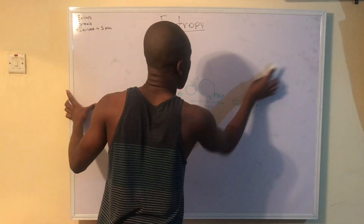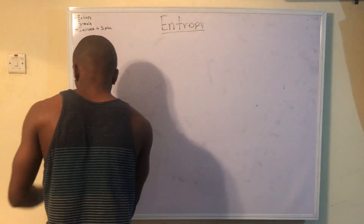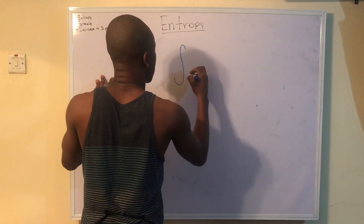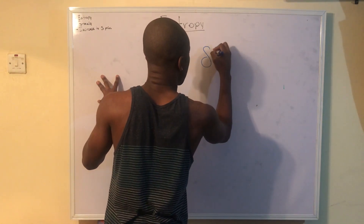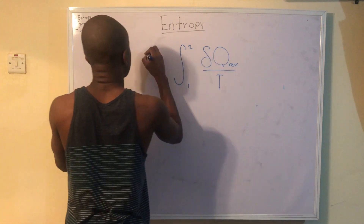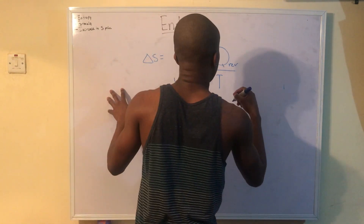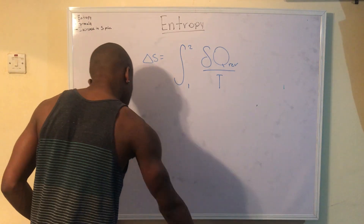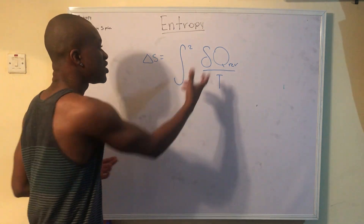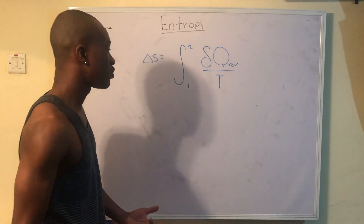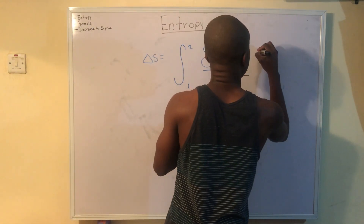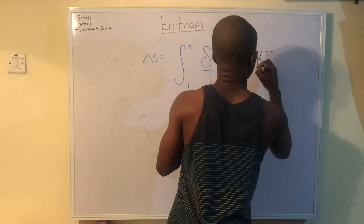We can define entropy — or rather the change in entropy — as dS = δQ/T, evaluated as a normal integral this time. With the units, we get kilojoules over Kelvin.